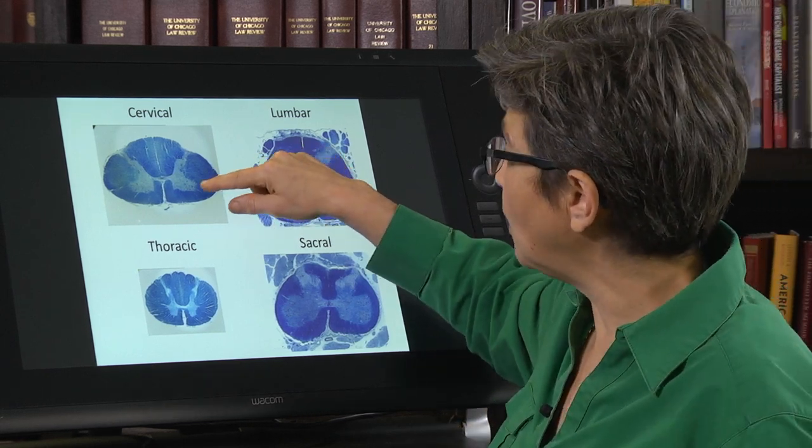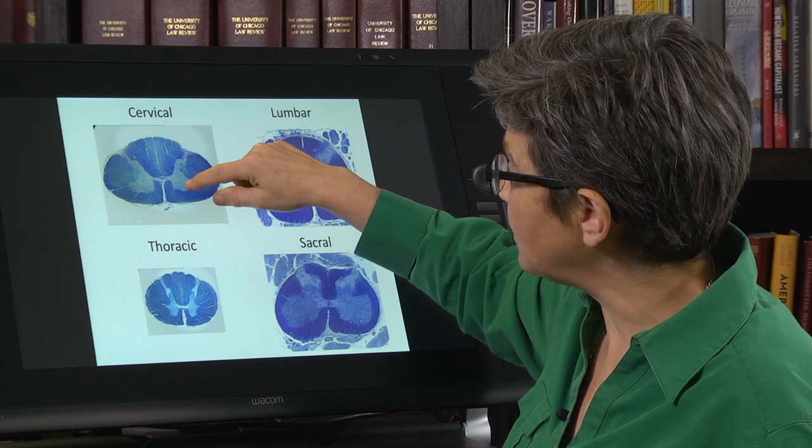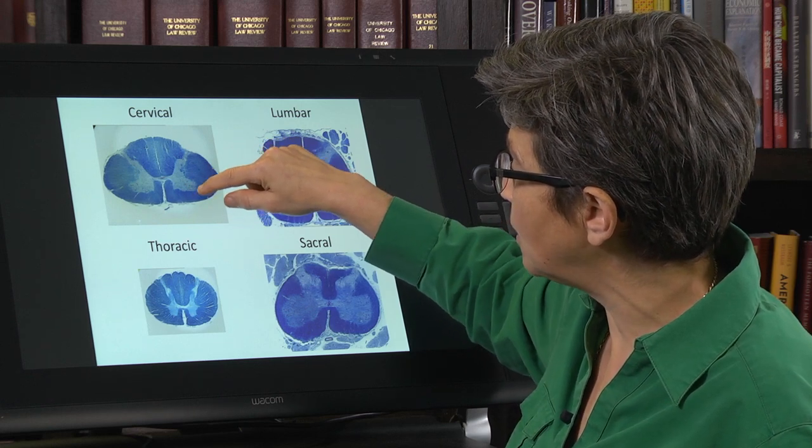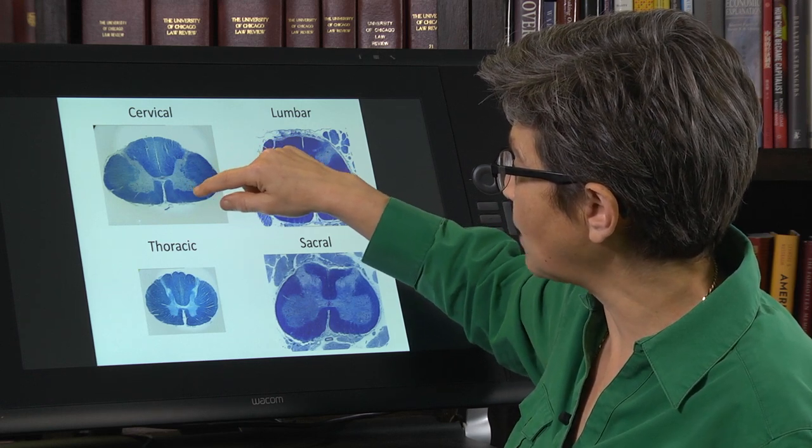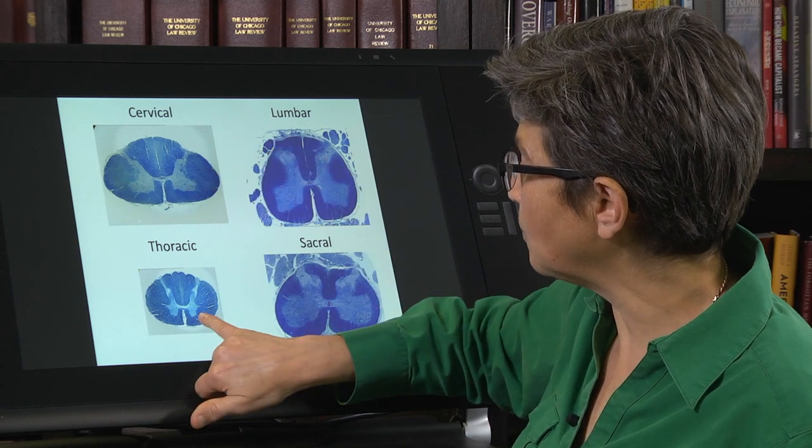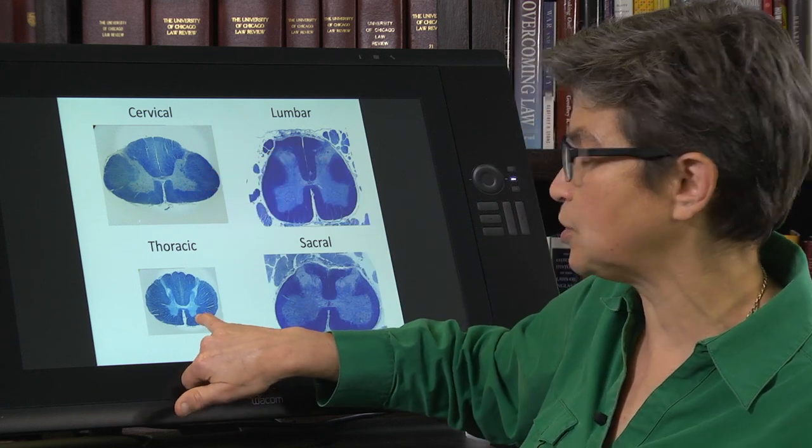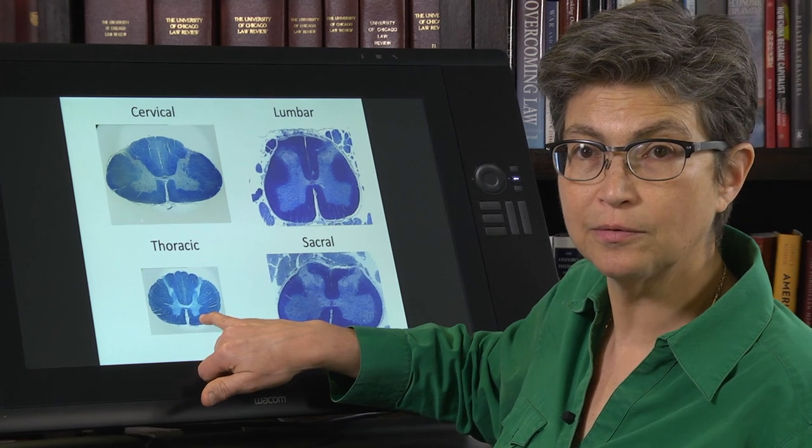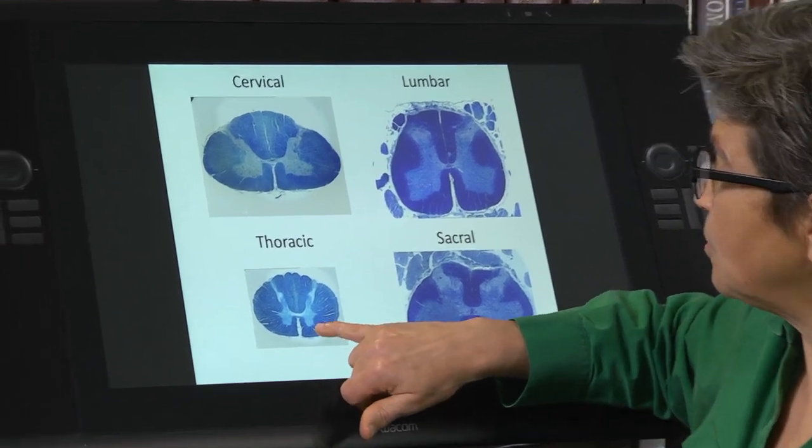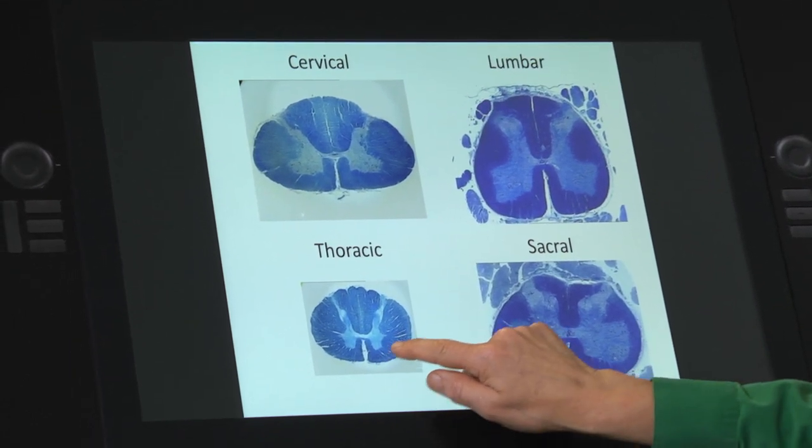So the cervical spinal cord, there's this large extension, lateral extension to the ventral horn. And then compare it to the thoracic cord, where there's just this tiny little tidbit here. Can we zoom in on that? So you see there's no lateral extension.